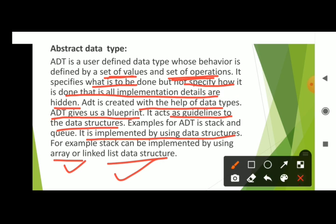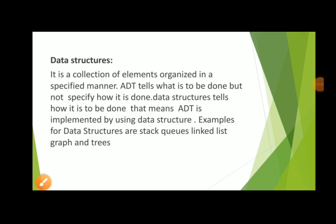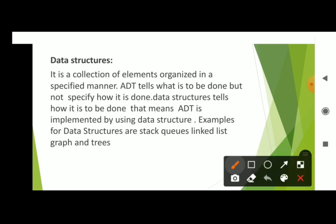Next, data structures. A data structure is a collection of elements organized in a specified manner — that means organizing the data is called data structures. ADT tells what is to be done but does not specify how it is to be done, whereas data structures tell how it is to be done. ADT is implemented by using data structures.